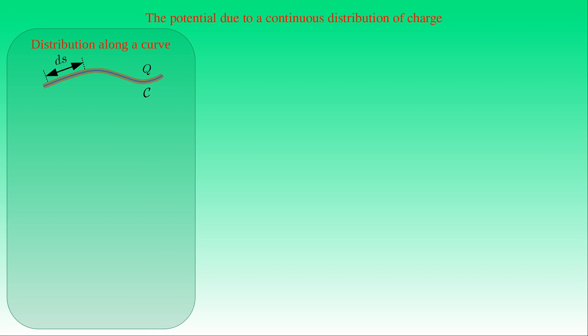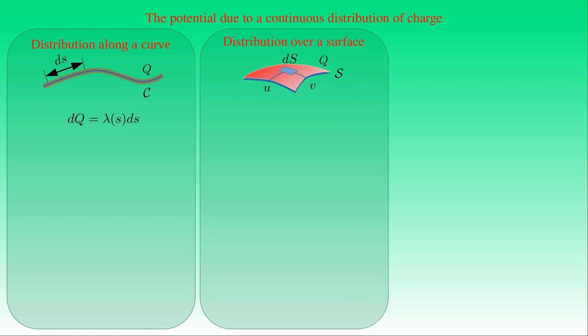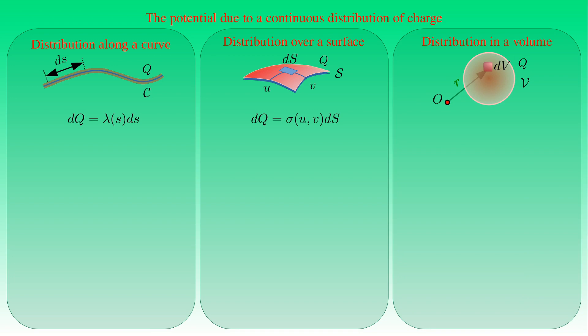We now determine the electric potential due to a continuous distribution of electric charge. For charge q distributed along curve C, the linear charge density λ is defined so that λ·ds gives the infinitesimal charge dq of a line element. For charge over surface S, surface charge density σ gives dq = σ·dS. For charge in volume V, spatial charge density ρ gives dq = ρ·dV. We approximate continuous distributions as systems of point charges distributed along the curve, over the surface, or in the volume.